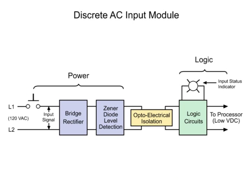Starting with the AC discrete input module, the circuit is comprised of two sections. The first section is referred to as the power section, and the second is called the logic section.